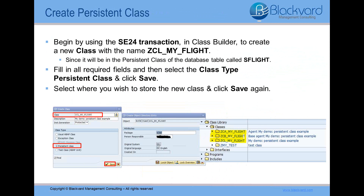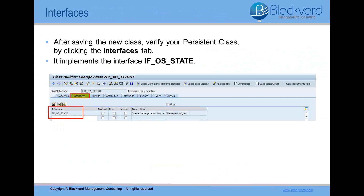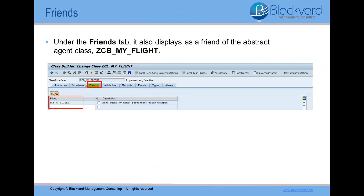Once that is done, click Save again. Now, if you start transaction SE80 and navigate to your local temporary directory, you will see the list of the newly created classes ZCA, ZCB, and ZCL. After saving the new class, you can now verify exactly what persistent class means. As you can see here, under the interfaces tab, it implements the interface IFOSState, like I showed you a few moments ago in the diagram we reviewed. It is also a friend of our abstract agent class, ZCB My Flight, as you can verify under the friends tab.